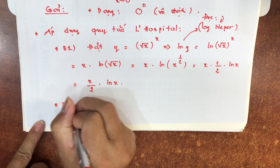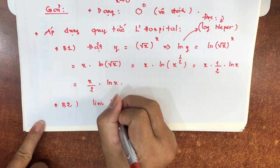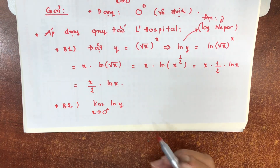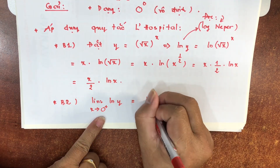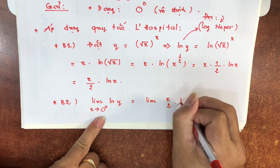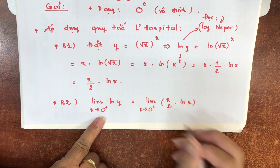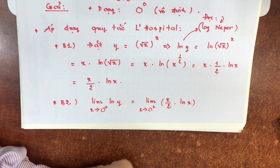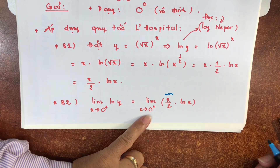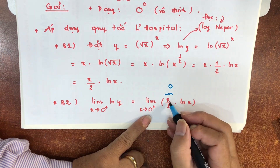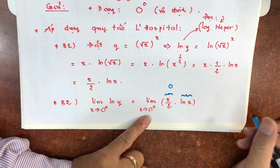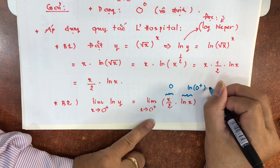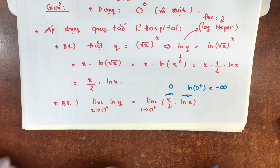Bước 2: tính lim của ln y khi x tiến về 0⁺. Tức là tính lim của (x/2)·ln x khi x→0⁺. Thừa số thứ nhất x/2: khi x→0 thì x/2 → 0. Thừa số thứ 2: ln x khi x→0⁺ — cả lớp lưu ý chỗ này hơi khó — ln(0⁺) = -∞. Vì trên đồ thị hàm y = ln x, khi x tiến về 0⁺ thì đồ thị chạy xuống phía dưới về -∞. Như vậy giới hạn đang có dạng 0·(-∞) — dạng vô định thứ 4.